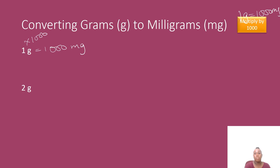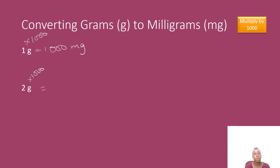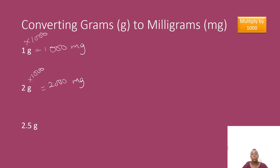If I want to convert from grams to milligrams, I need to multiply by 1000. 2 by 1000 is going to give me 2000, so 2 grams is equal to 2000 milligrams. Let's do another one — here we have 2.5 grams.